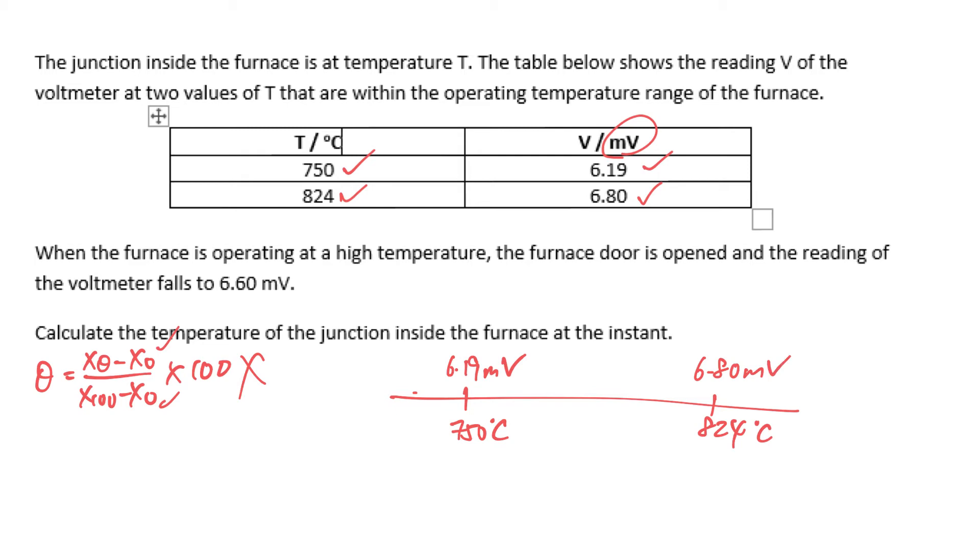So when it is given that the voltmeter reading is 6.60 millivolt, how do you find the unknown temperature T? Since the temperature and the voltmeter reading are linearly related, the gradient is the same. So I'll basically be using gradient of these two points versus gradient of these two points.